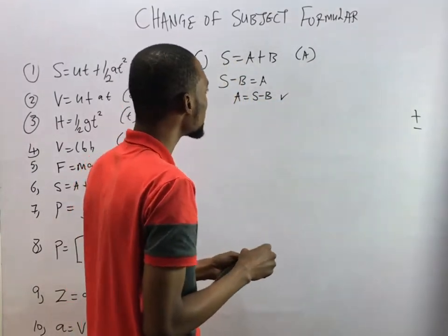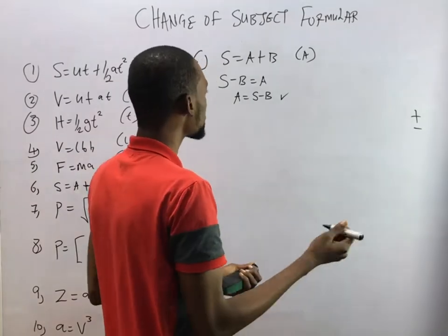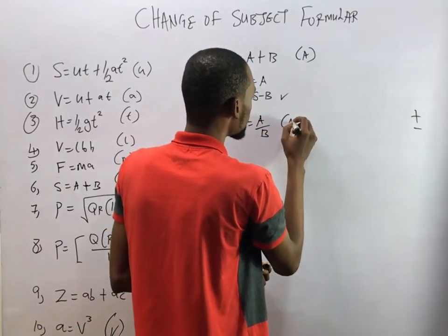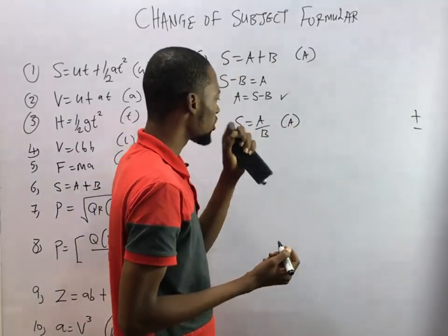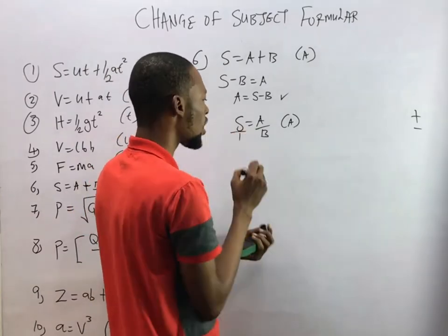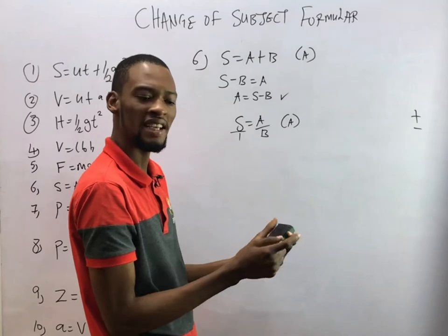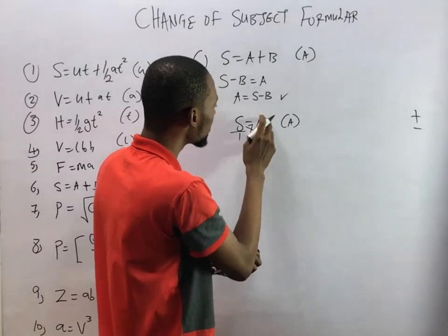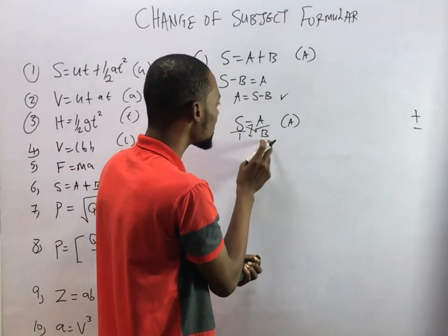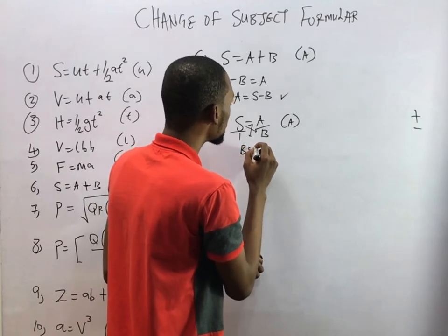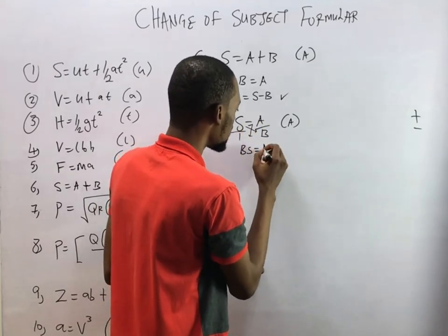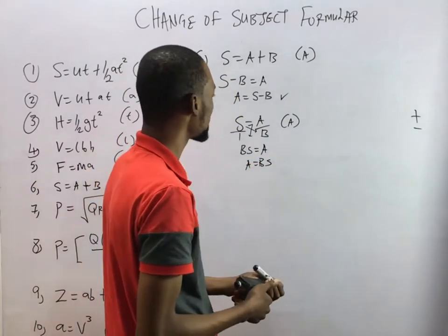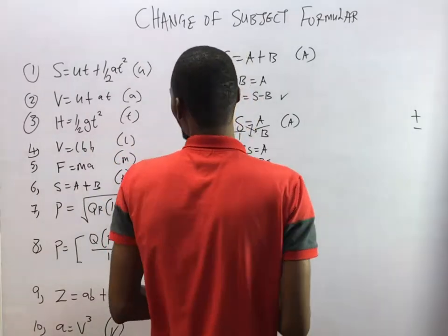If we have S equals A over B and are asked to make A the subject formula, note this is the same as A over B equals S over 1. We cross multiply: S times B gives SB, and 1 times A gives A. Therefore A equals BS. We've made A the subject formula.